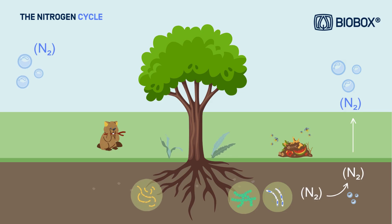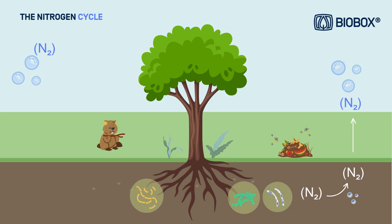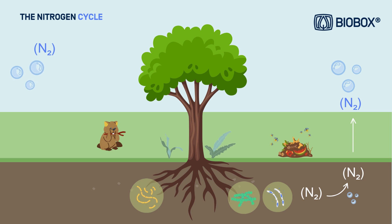This cycle ensures that nitrogen is available in forms that living organisms can use, maintaining the balance of ecosystems.